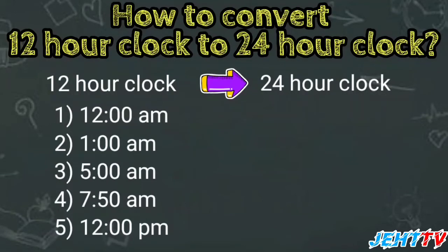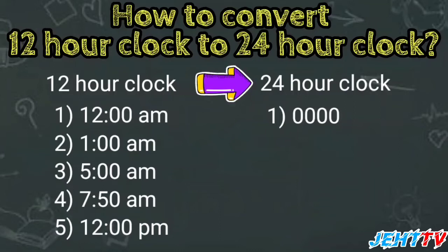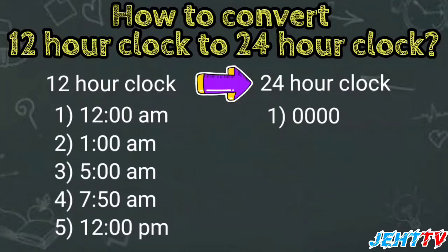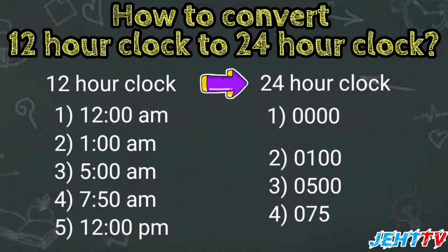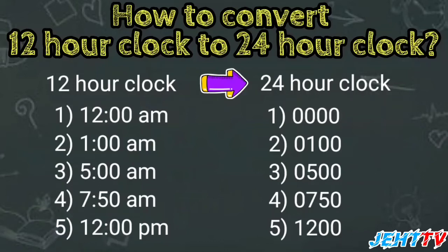When we change to 24-hour clock, it's very easy. For number 1, 12 AM, we just directly write 0000. Why? Because 12 AM is the start of a new day — it is the beginning of the day. For number 2, 1 AM, we write 0100. For number 3, 5 AM, we write 0500. For number 4, 7:50 AM, we write 0750. And for number 5, 12 PM, we write 1200.